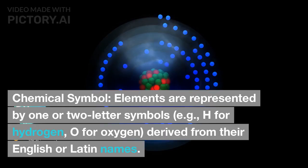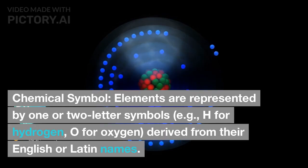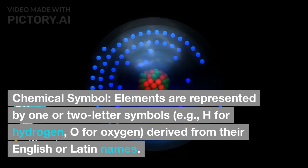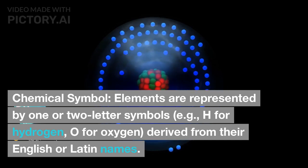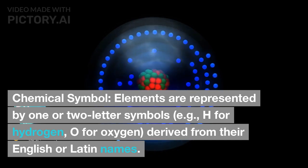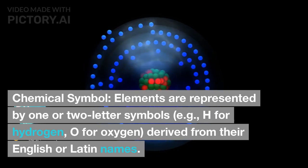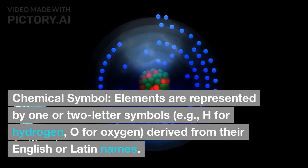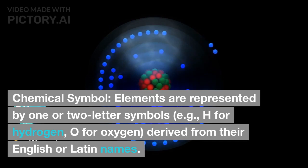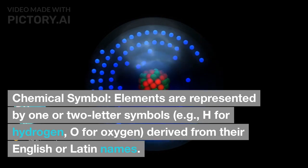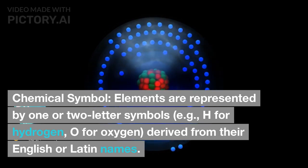4. Chemical symbol: elements are represented by one or two letter symbols, e.g., H for hydrogen, O for oxygen, derived from their English or Latin names.